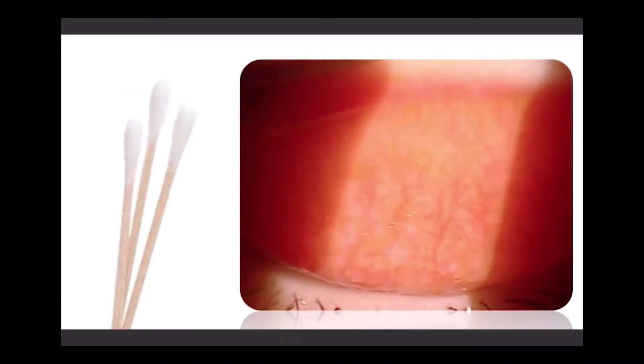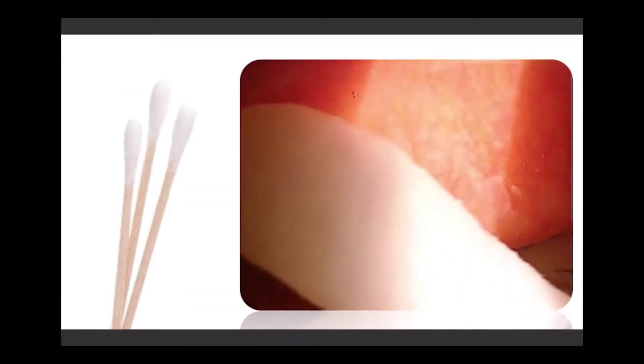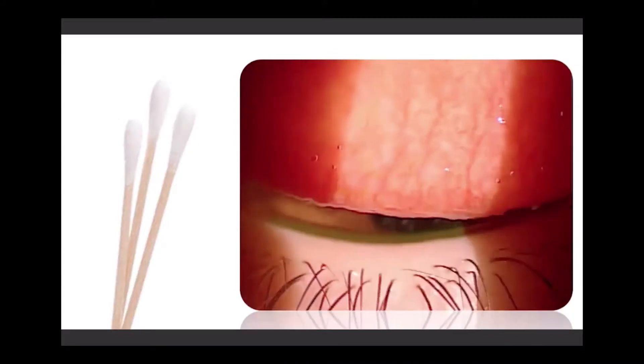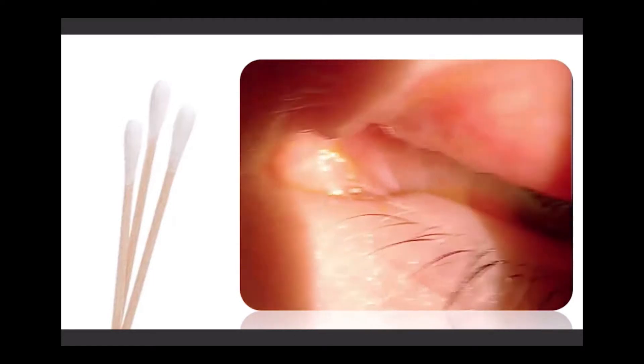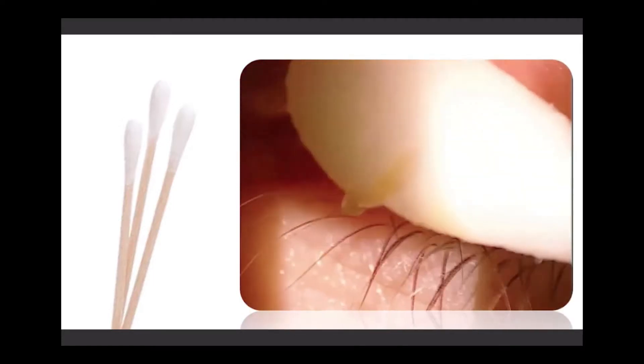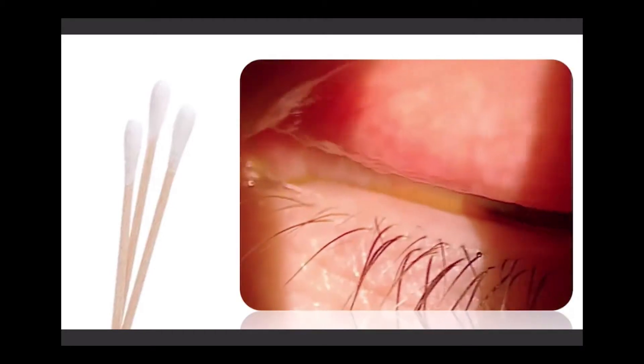Now the first step in treating patients with GPC is removing the inciting agent, which typically involves temporarily discontinuing contact lens wear. What we do in the office is also swab the superior tarsal plate to remove excessive mucus that may be present. Although the condition is relatively self-limiting when contact lens wear is discontinued, we prefer to accelerate the resolution of this condition by prescribing a topical corticosteroid four times a day.